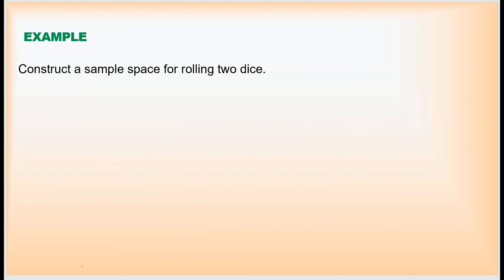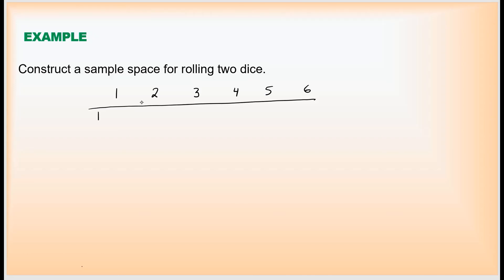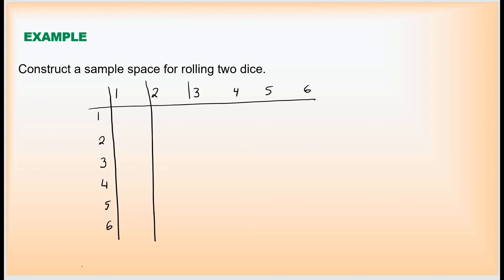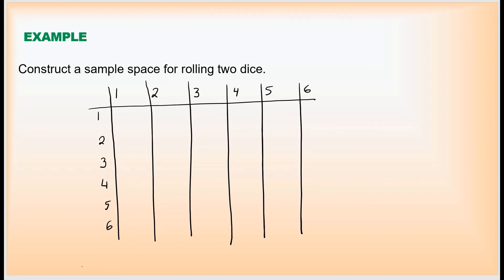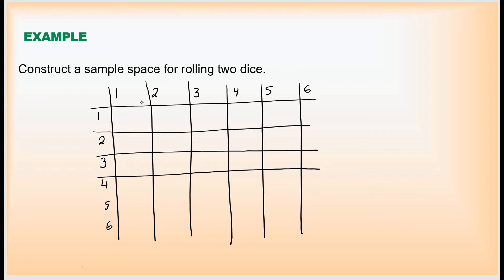Let's take one more example: construct a sample space for rolling two dice. By rolling the first die you can get 1, 2, 3, 4, 5, or 6. By rolling the second die you can also get 1, 2, 3, 4, 5, or 6. We are going to list all possible outcomes — what you get on the first die and what you get on the second — using a table method.